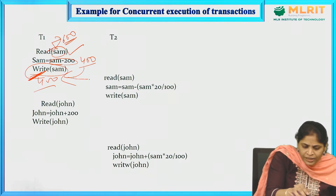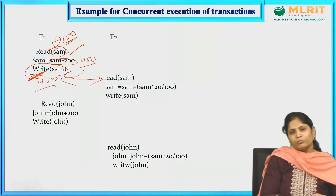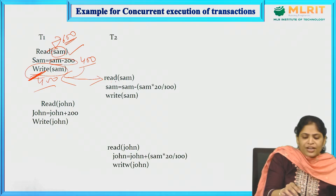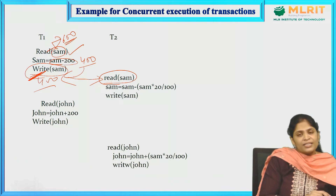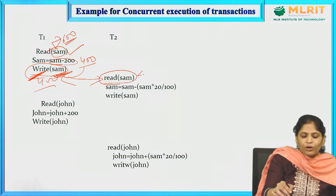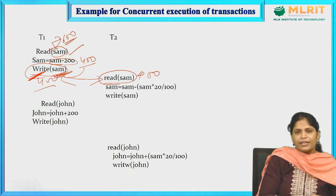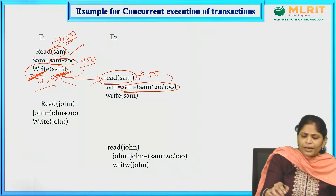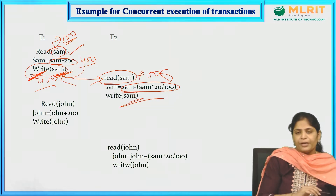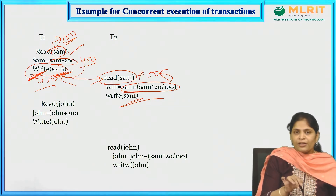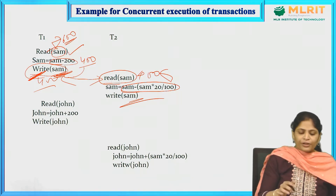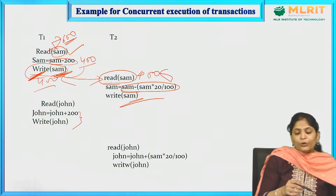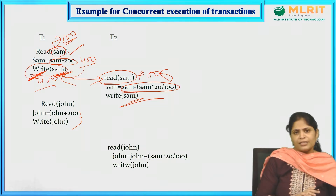After that, transaction T2 has started. T2 reads the SAM value. The latest updated value is 400, so 400 will be considered. The formula will be applied using 400 and the value will be updated. While doing this kind of interleaved transaction, this may lead the database into an inconsistent state.